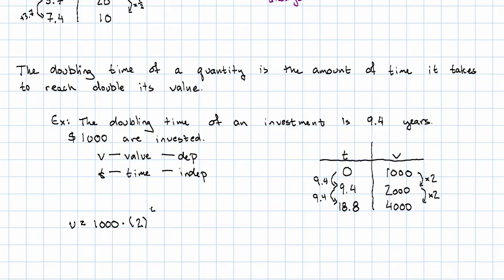It's multiplied by 2 once every time 9.4 years pass. When we're working with a doubling time, our multiplier is always 2, and we have t over the doubling time.